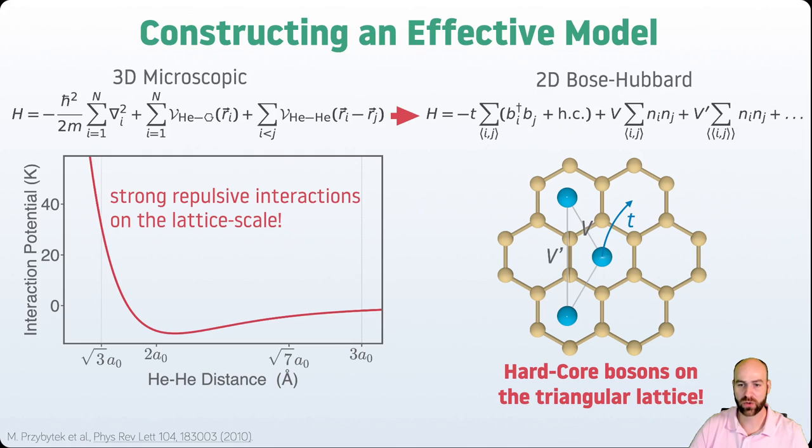So our goal is to understand if there's no superfluidity in the first layer, can we understand that and can we maybe engineer it? The goal for us is to start from the full 3D microscopic model of helium on graphene, which includes the adsorption potential and the helium-helium interaction potential shown here, which exhibits strong repulsive interactions on the scale of adsorption on the graphene lattice.